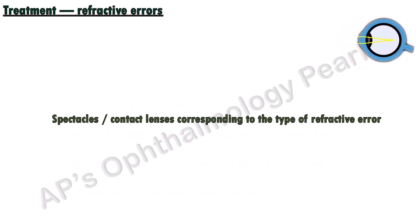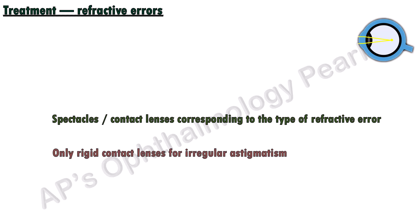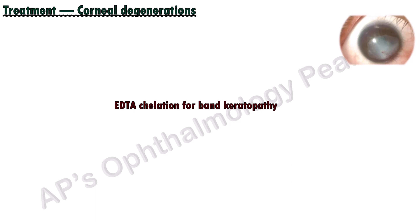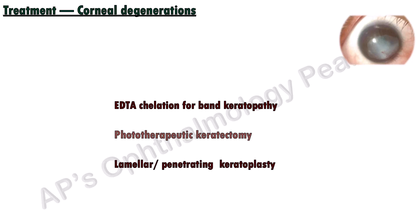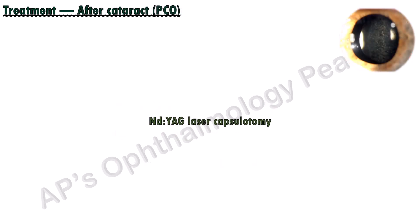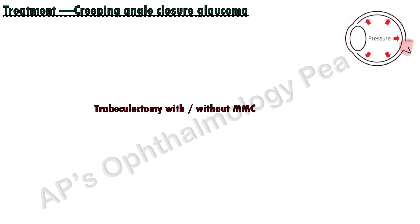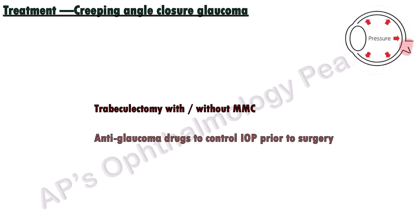Spectacles or contact lenses correct refractive errors; irregular astigmatism, however, can only be corrected by rigid contact lenses. The treatment of corneal degenerations depends on the individual degeneration — for example, for band keratopathy, chelation with EDTA may be done; phototherapeutic keratectomy may be used for superficial conditions; and surgical treatment involves either lamellar or penetrating keratoplasty depending on the depth of the lesion. Posterior capsular opacification is treated by Nd:YAG laser capsulotomy. Since the angle is closed by peripheral anterior synechiae, glaucoma surgery is indicated in creeping angle closure glaucoma; anti-glaucoma drugs are given prior to surgery to control the intraocular pressure.